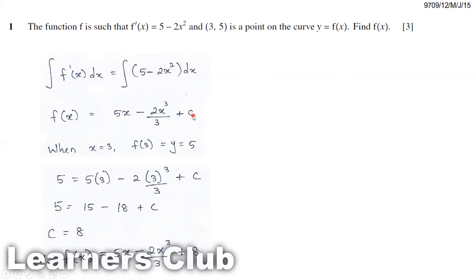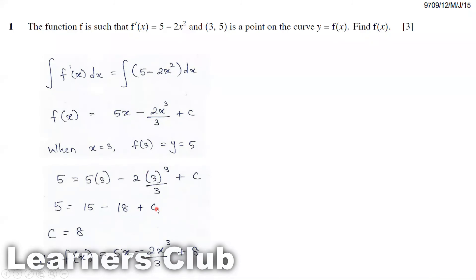Now we have to find the value of c in order to get the function. We know the coordinate is given: when x equals 3, f(3) equals 5. So substitute into the equation: 5 equals 5 times 3 minus 2 times 3 cubed over 3 plus c. Simplifying, 5 times 3 is 15, and the second term gives 18. Taking c as the subject, we get c equals 8.